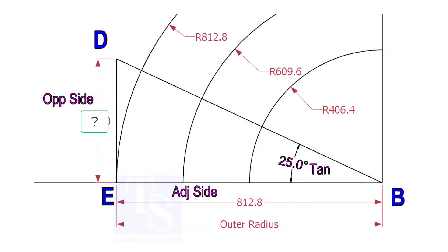Mark a line 25-degree rotated from the base line AB. To draw the line DB, we need to know the length of the line ED.